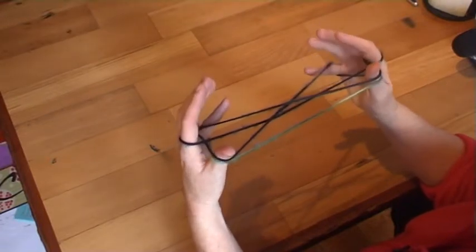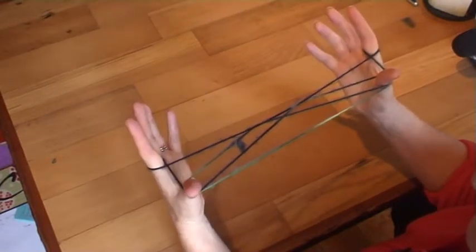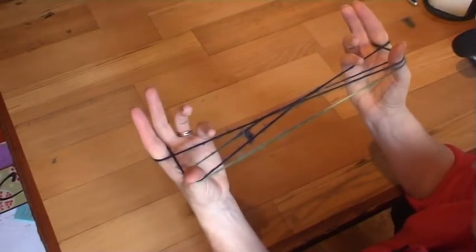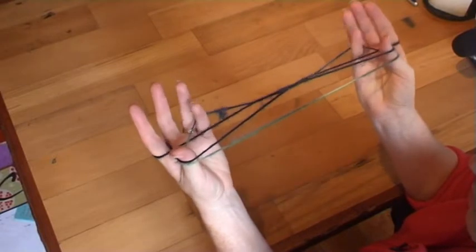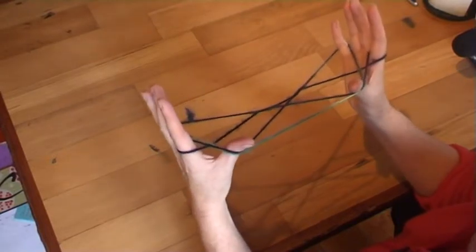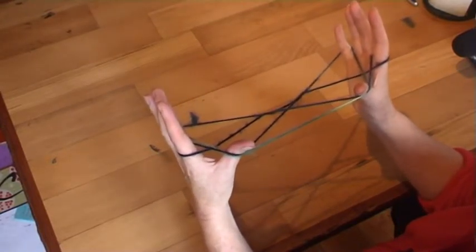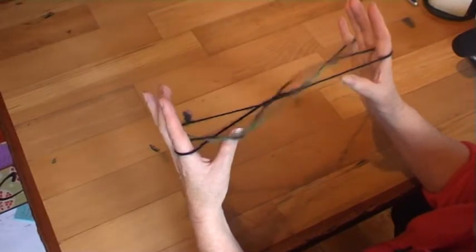Now drop the string around your pinkies. Now take your pinkies over the string in front of them and pull the next string back towards them. Now drop your thumbs. This is the cat's whiskers.